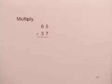In this problem, we're asked to multiply two whole numbers. We'll multiply 65 times 37.